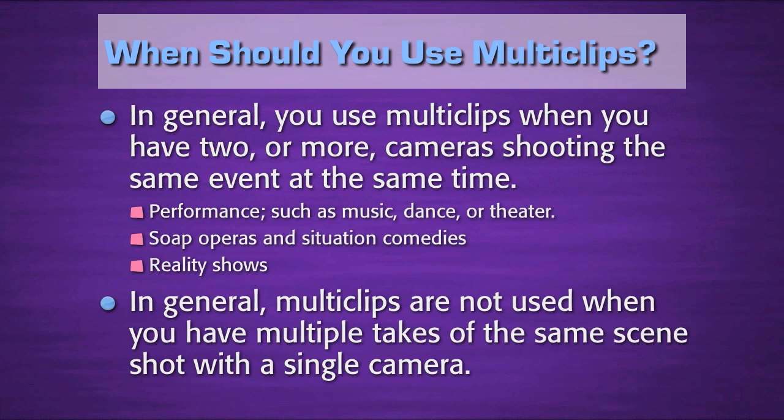In general, you use multi-clips when you have two or more cameras shooting the same event at the same time. The classic example is performance, such as music, dance, or theater. But soap operas and situation comedies are also shot with multiple cameras, as are reality shows. Multi-clips are not used when you have multiple takes of the same scene shot with a single camera — it's really when you've got multiple cameras covering the same event that multi-clips become most useful.